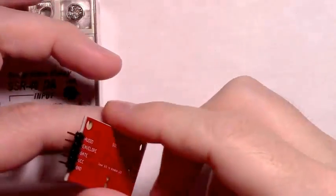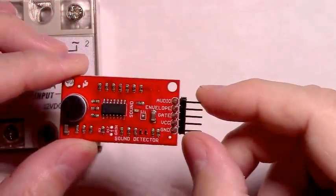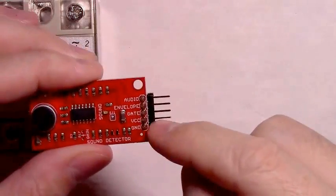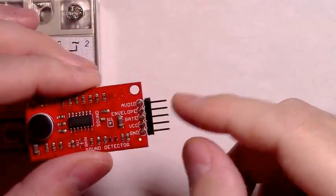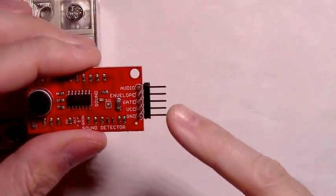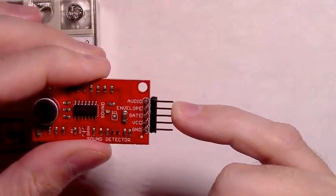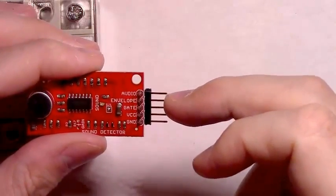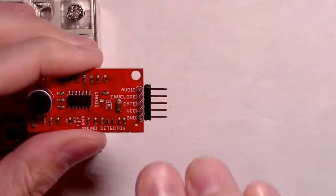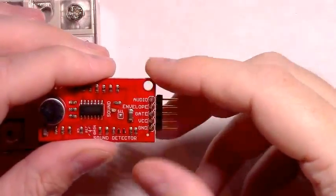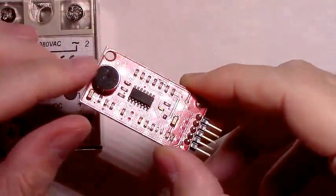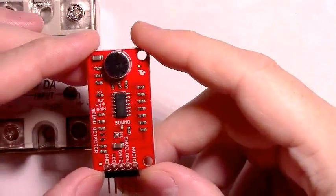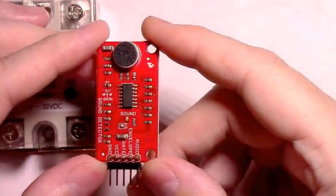We're only going to be using three of the pins. Note that this board doesn't come with these headers soldered on—you have to solder them on yourself if you decide to buy this. So you'll need enough soldering skills to attach these headers without tearing up the board. But we're just going to use the ground, the VCC, and the envelope pin. The envelope pin on the sound detector is a peak detector output—it's chasing the peaks and the valleys of the analog signal that's received through this microphone.